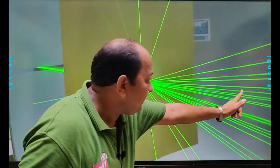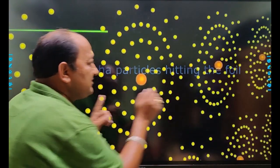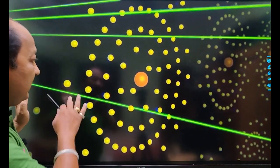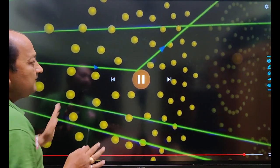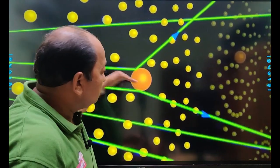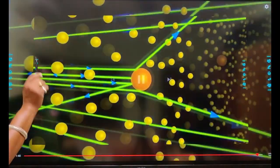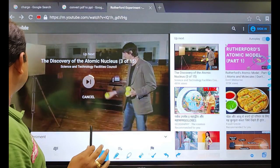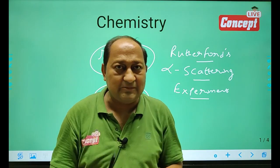Let us conclude this observation. Maximum have passed out straight. These are the alpha particles. Maximum pass out without any deflection. Some pass out at small angles and very few are rebounded back. The animation of this process is entirely complete. This was Rutherford's alpha scattering experiment.